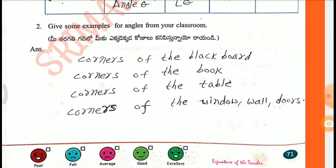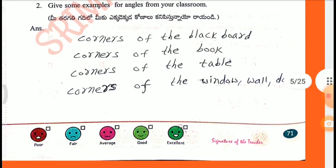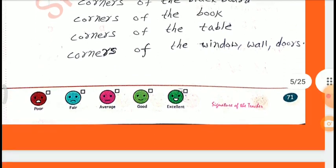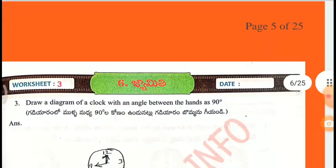Second one: Give some examples of angles from your classroom. Corners of the blackboard, corners of the book, corners of the table, corners of the window, wall, doors, etc.